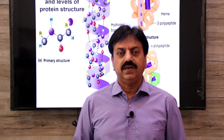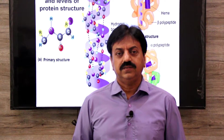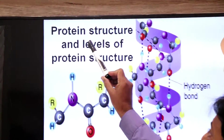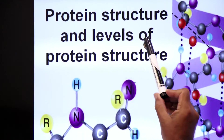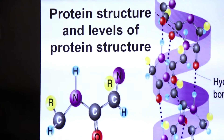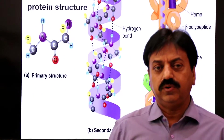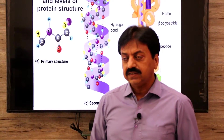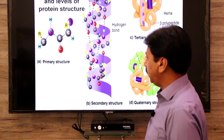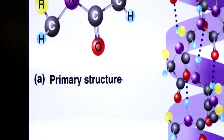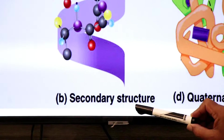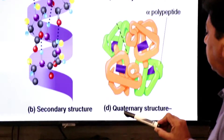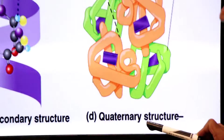Assalamu alaikum, namaskar dear students. Today we are going to talk about protein structure and levels of protein structure. In today's lecture, we will define protein structure and discuss 4 levels of protein structure: primary structure, secondary structure of protein, tertiary structure of protein, and quaternary structure of protein.